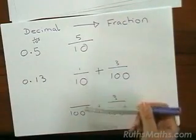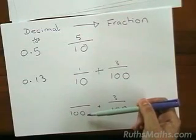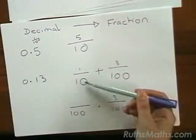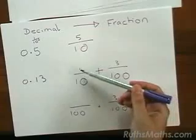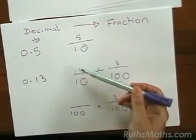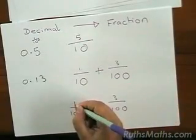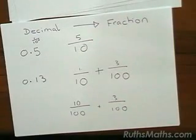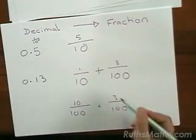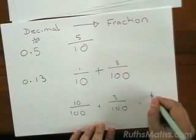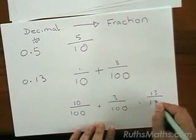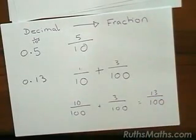To get from ten to one hundred, I timesed by ten. So because I did that to the bottom, I also have to do it to the top. So I have one times ten, which gives me ten. So I have ten hundredths plus three hundredths, which gives me thirteen hundredths.